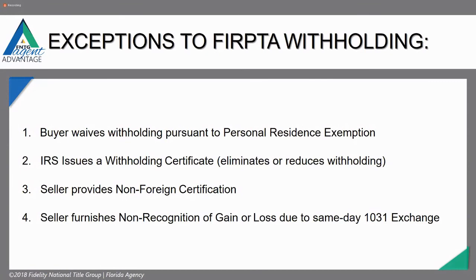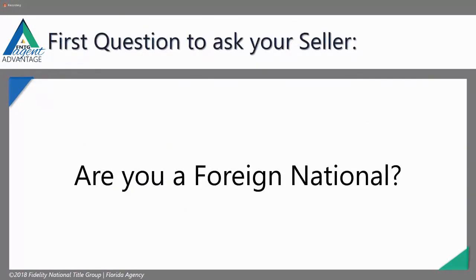There are exceptions to the FIRPTA withholding. The fourth exception — 1031 exchange — has its own in-depth class series. We're going to talk about the first three exceptions: the buyer waiving the withholding pursuant to the personal residence exemption, the IRS issuing a withholding certificate, or the seller providing a non-foreign certification. These are three ways we don't have to do withholding. The first question you want to ask your seller is: are you a foreign national? The FIRPTA rules only apply to a foreign national seller.